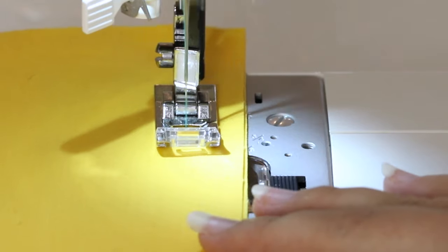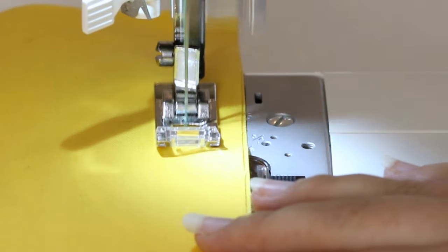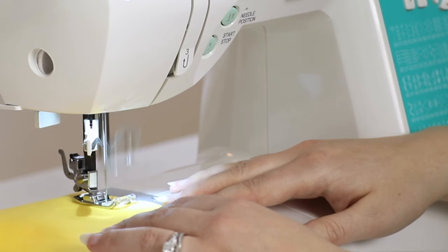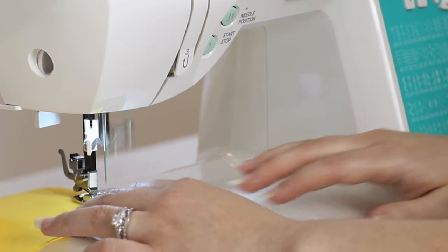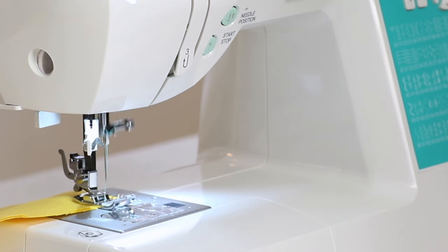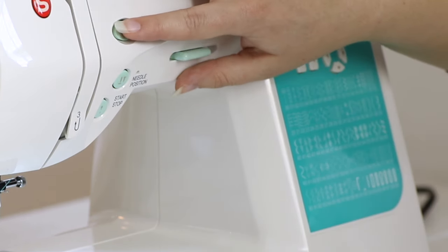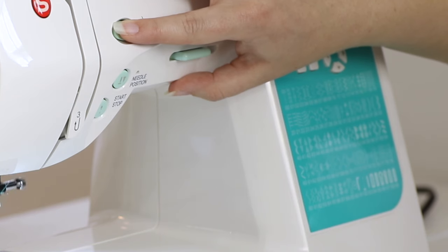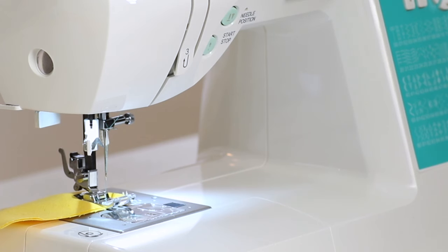Notice I'm not pushing or pulling the fabric. I am simply guiding it along the guideline. Stop sewing once you've reached the end of your fabric. Press and hold the reverse button to sew backwards a few stitches. Release the reverse button and sew to the end.